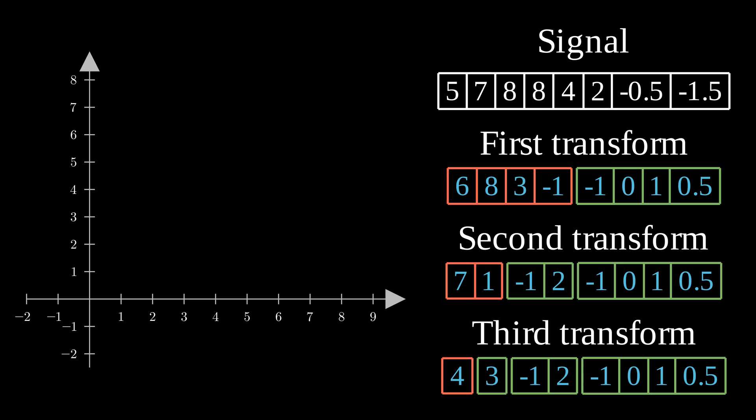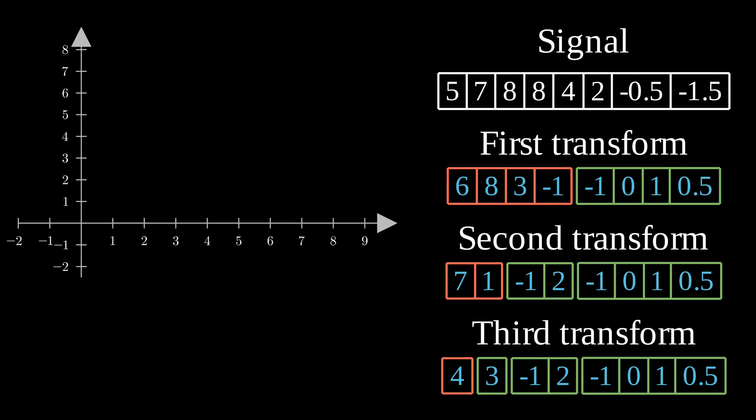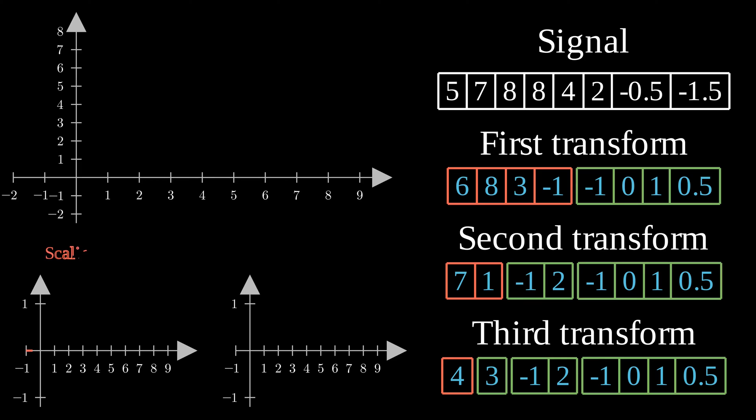To do the inverse transform, we need to go backward. To do so, we are going to use two functions, the scaling function and the wavelet function. These functions are characteristic of a specific wavelet transform and differ between them. For the Haar transformation, here is how they look. The scaling function will be used to reconstitute the approximation space and the wavelet function will be used to reconstitute the detailed spaces.